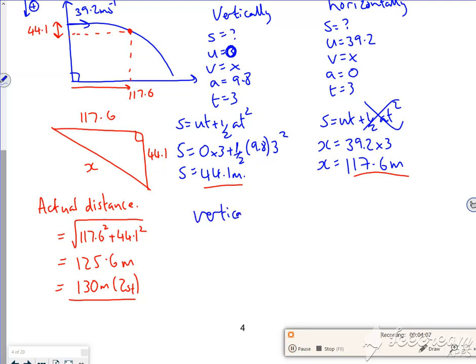So vertically, I've got my distance now, I just haven't got this. If I use V equals U plus AT, my speed would be 0 plus 9.8 times 3. So my speed vertically will be 29.4.